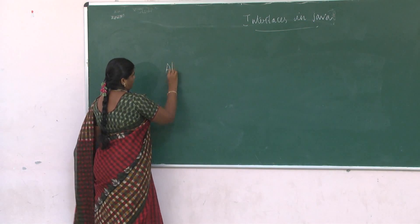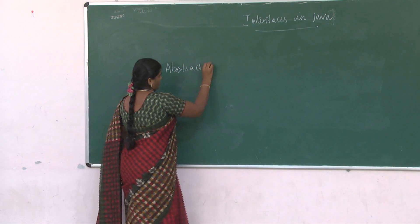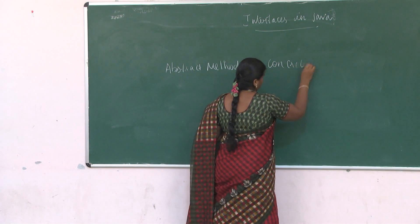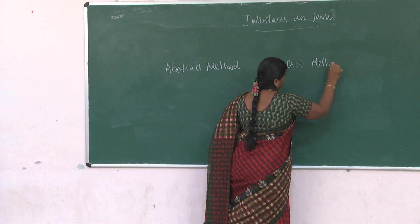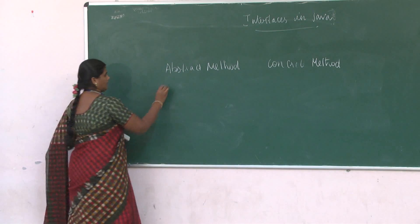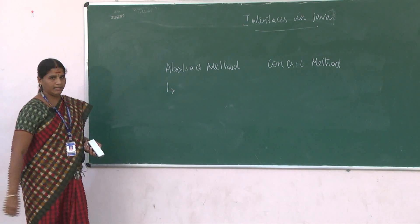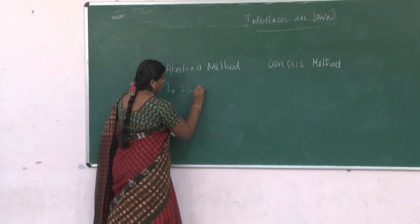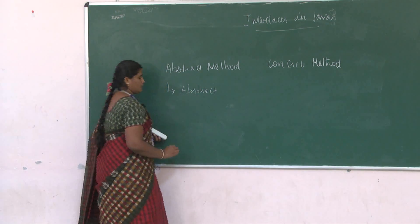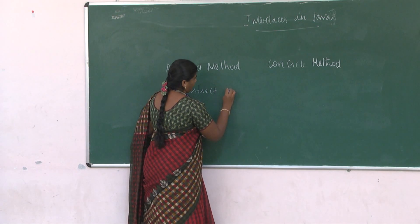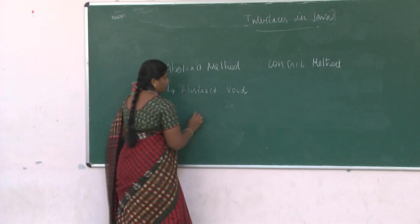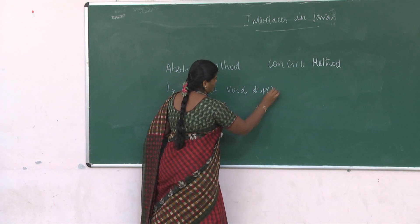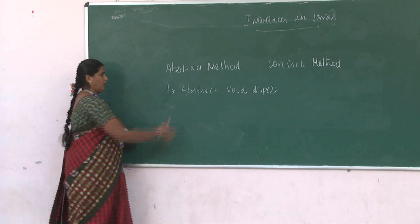We should know about some terms: what is an abstract method, and what is a concrete method. An abstract method is a method that can only be declared but cannot be defined. The abstract method is always prefixed by the keyword abstract, followed by the return type and the name of the method. It should be terminated by a semicolon and does not have any body of statements.